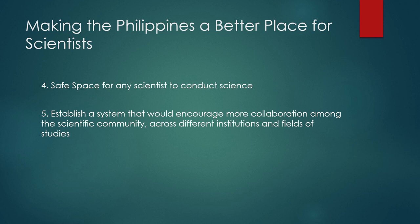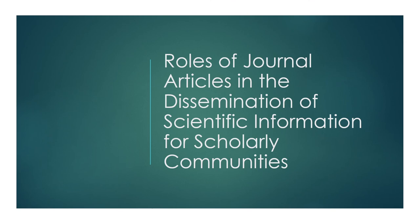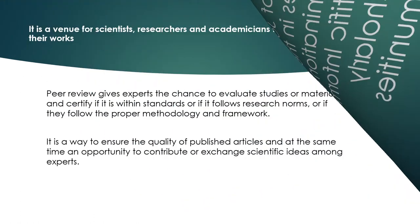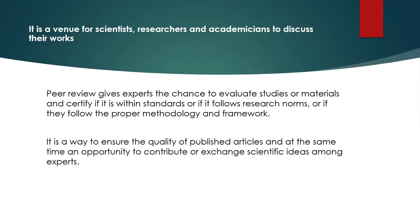Given that scientific journal articles are technical in nature, it is vital to ensure that end-users have a good understanding and prior knowledge of scientific and technical processes and facts so they can apply these learnings appropriately. We now see that the role of journal articles in the dissemination of scientific information for scholarly communities is to serve as a venue for scientists, researchers, and academicians to discuss their work. Peer review is one of the most important processes in publication — it allows experts to evaluate presented studies, certify they meet standards, measure quality, and exchange scientific ideas among experts.